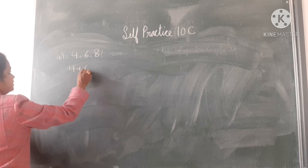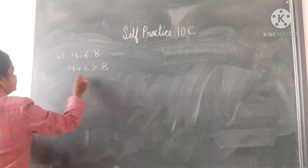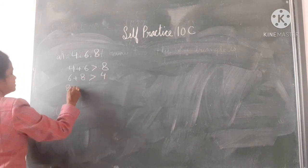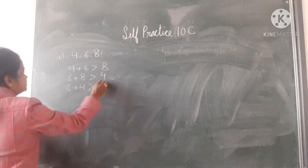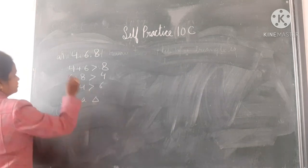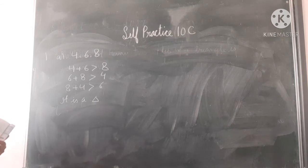4 plus 6 is greater than 8. 6 plus 8 is greater than 4, and 8 plus 4 is greater than 6. It is a triangle. This is first A part.